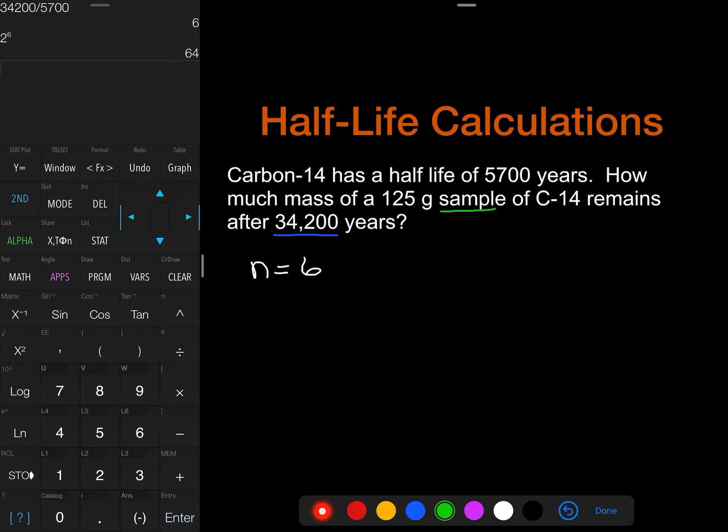So now in order to do the sample that remains, which is an amount, so sometimes you'll see amount, sometimes you'll see mass, the sample remaining I'm going to shorthand, that is going to be equal to the original mass, so original mass